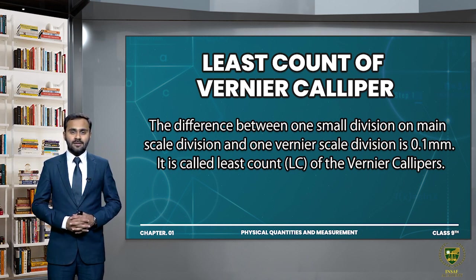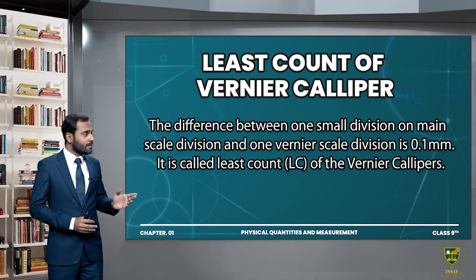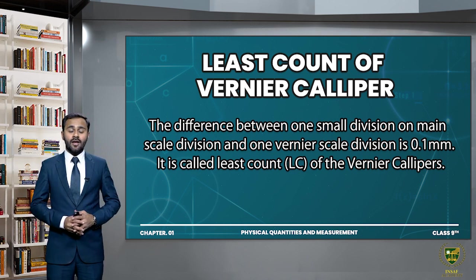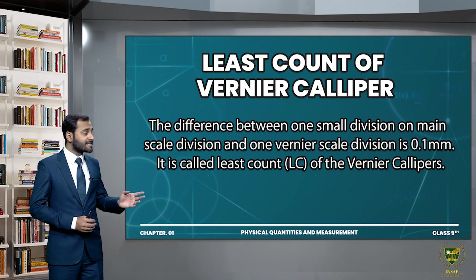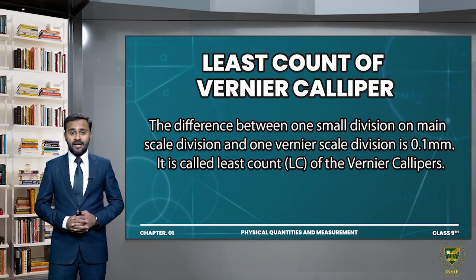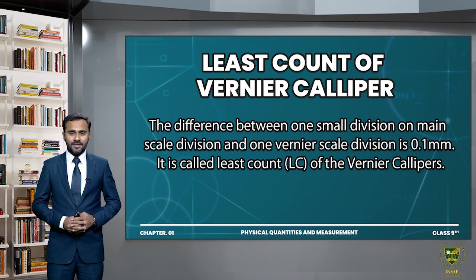We can define it as: the distance between one main scale division and one Vernier scale division is called the least count of the Vernier Caliper, which is 0.1 millimeter.